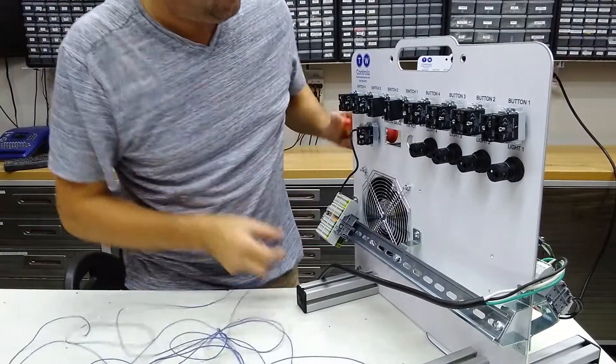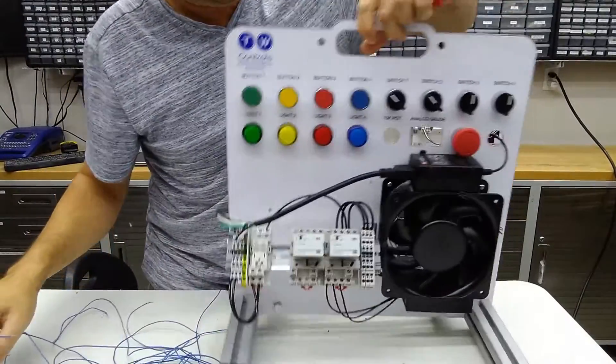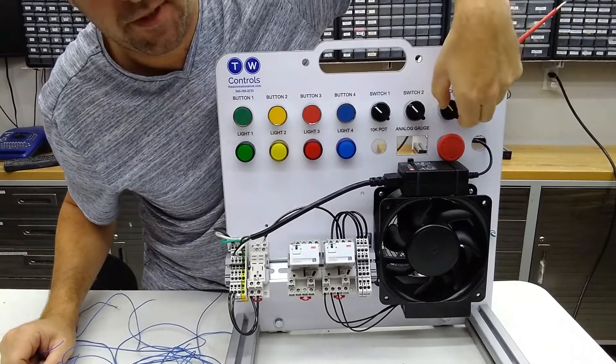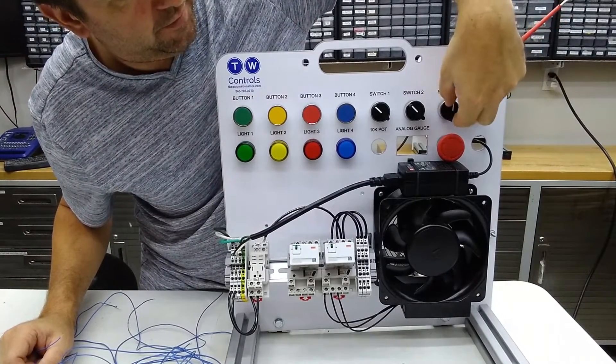And now what we're going to do is we're going to use switch number three on our trainer. Switch number three connects to a three-position selector. So we're going to use hand-off-auto.